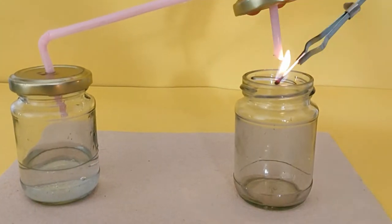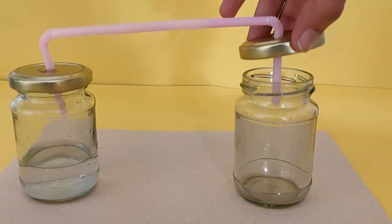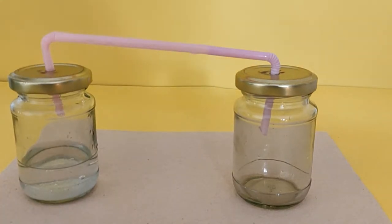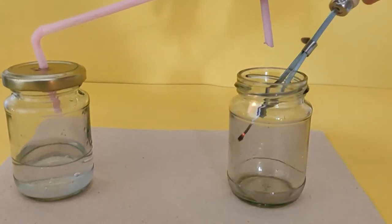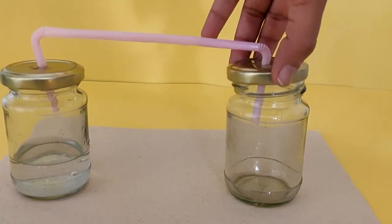Lower a burning ice cream stick or matchstick into the second glass jar using a test tube holder. You will notice that the burning match is extinguished immediately.